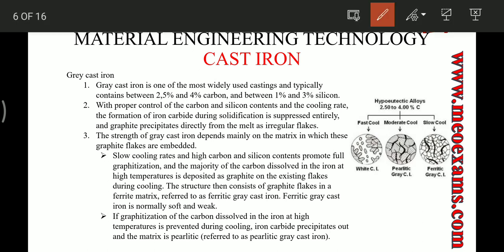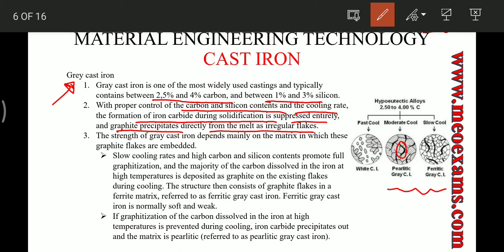Grey cast iron is one of the most widely used castings and typically contains 2.5 to 4% carbon and 1 to 3% silicon. With proper control of carbon and silicon content and cooling rate, the formation of iron carbide during solidification is suppressed and graphite precipitates directly from the melt in the form of irregular flakes. With proper cooling and carbon content of 2.5 to 4% and silicon of about 1.3%, this grey cast iron microstructure is formed.